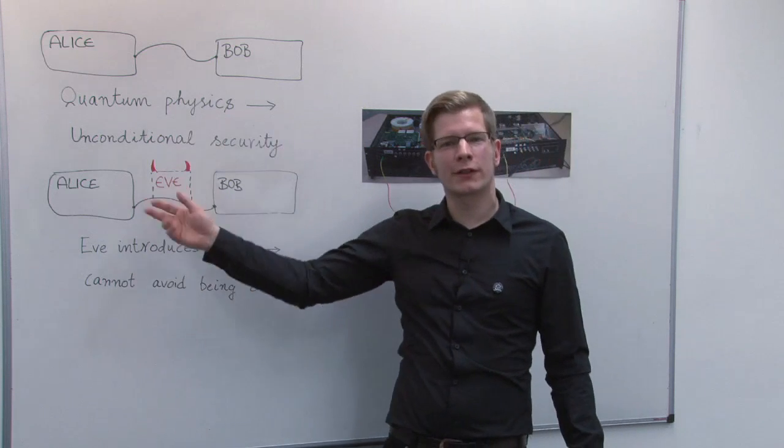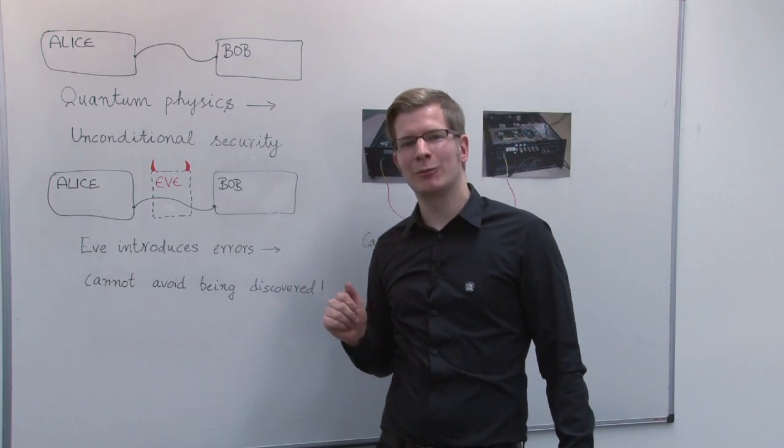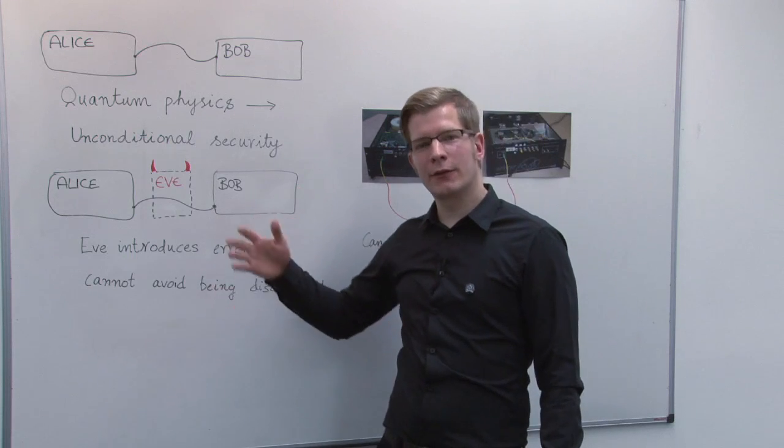A security proof for such a scenario requires certain model assumptions for the devices of Alice and Bob. This works fine in theory.